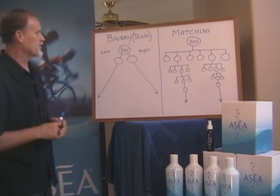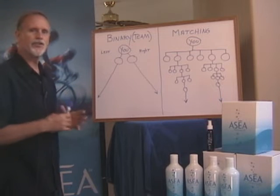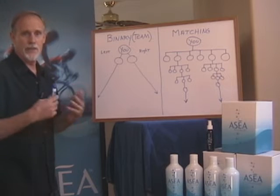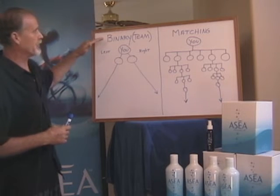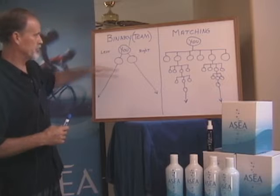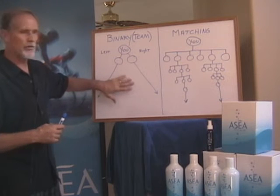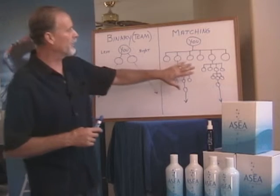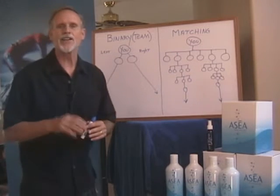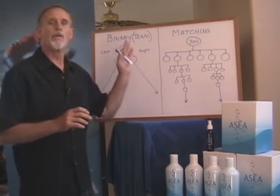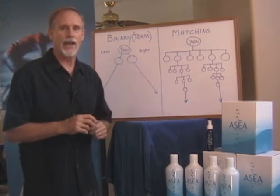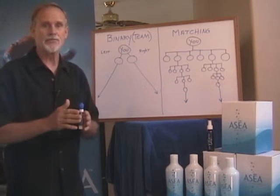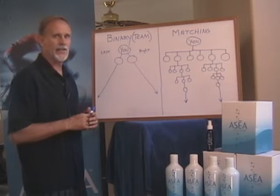In our ASEA business, we actually have two trees — what we refer to as trees. The binary or team commission tree is what we're going to talk about over here on our left side, and over here on the right side, we're going to talk about that sponsorship tree where the matching checks are paid. They're two separate trees that you build at the same time, so let's take a look at how that works.